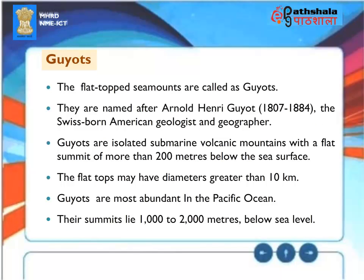Guyots: The flat-topped sea mounds are called Guyots, named after Arnold Henry Guyot (1807–1884), the Swiss-born American geologist and geographer. Guyots are isolated submarine volcanic mountains with a flat summit more than 200 meters below the sea surface. The flat tops may have diameters greater than 10 km. Guyots are most abundant in the Pacific Ocean, with their summits lying 1,000 to 2,000 meters below sea level.